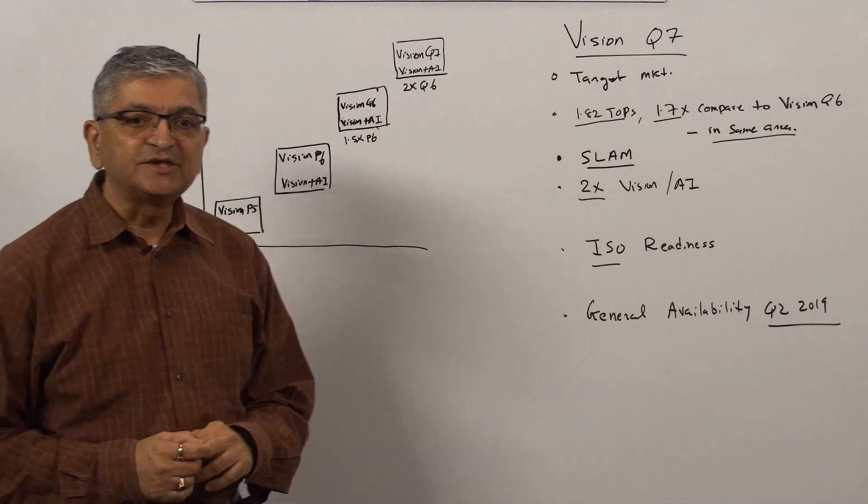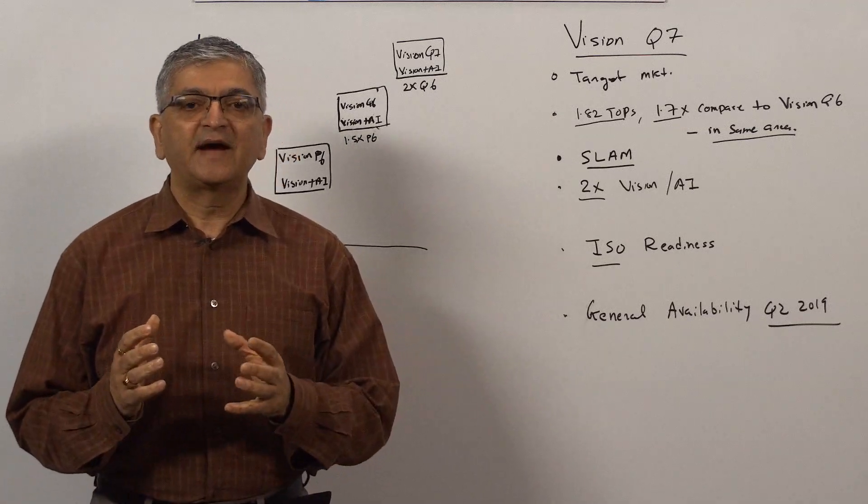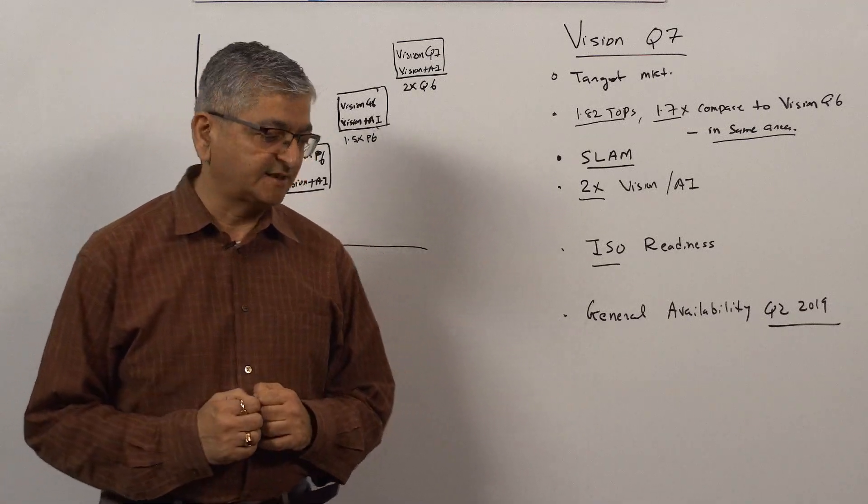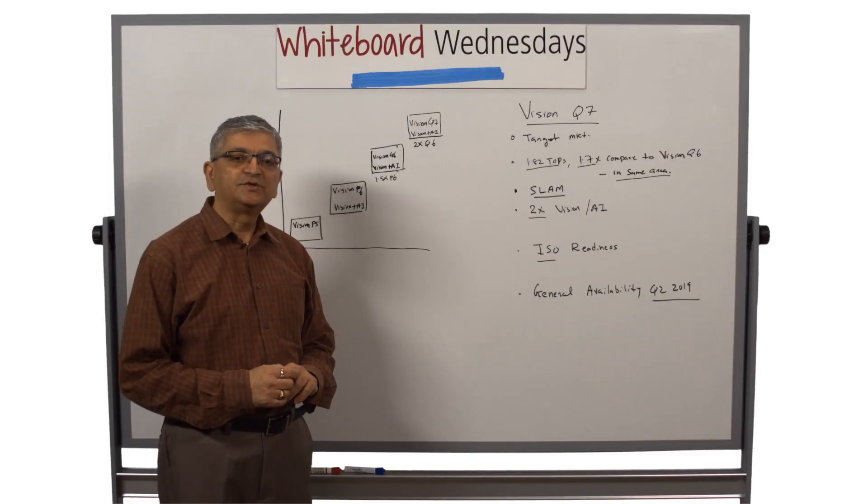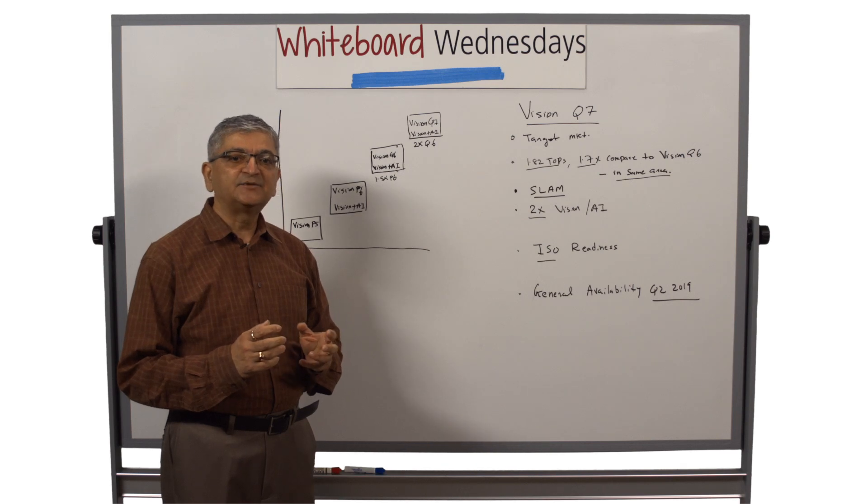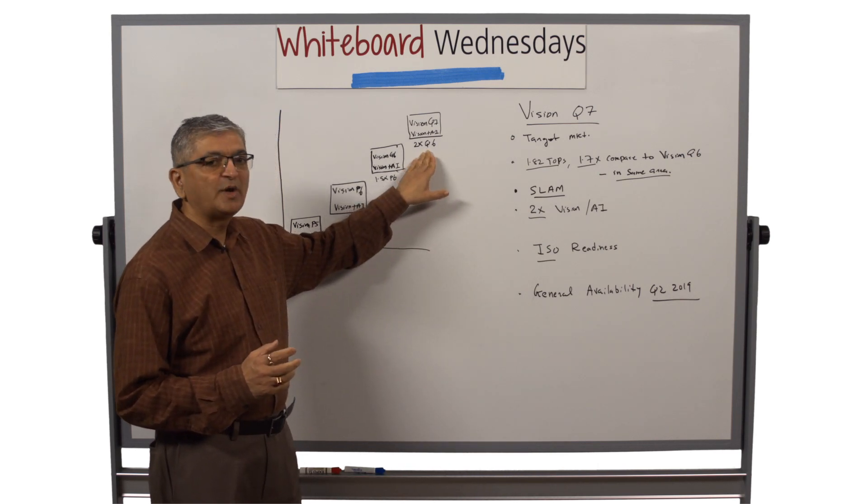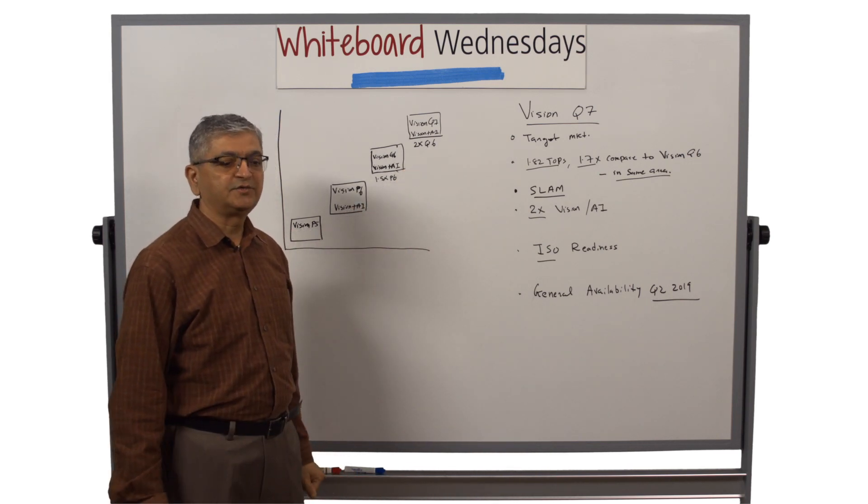Last year we introduced Vision Q6 that offered 1.5x performance over Vision P6. Today we are announcing Vision Q7, a Vision plus AI DSP IP which will offer 2x performance over Vision Q6.